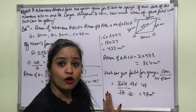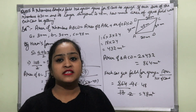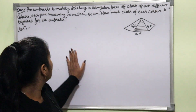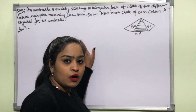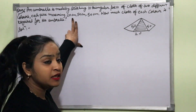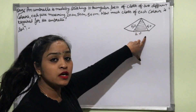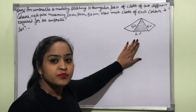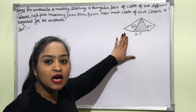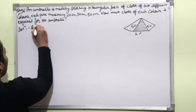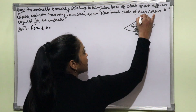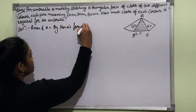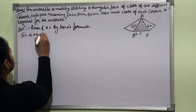This was question number 5 of NCERT. If you have any doubt, write in the comment section. Now, question number 6, exercise 12.2 of NCERT: An umbrella is made by stitching 10 triangular pieces of cloth of 2 different colors. The measurements given are 20 cm, 50 cm, and 50 cm. How much cloth of each color is required?